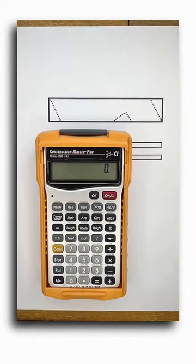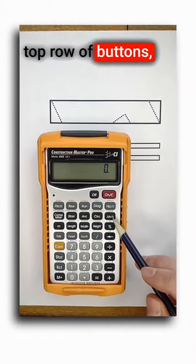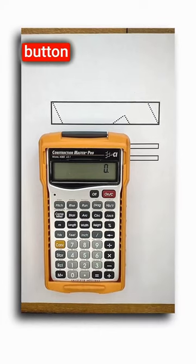Everything you need to frame a roof is located across the top row of buttons as well as the one jack button down the side.